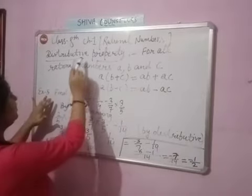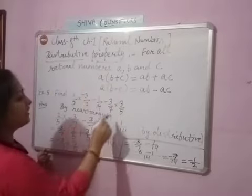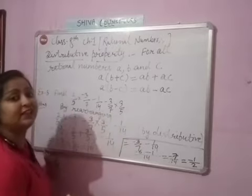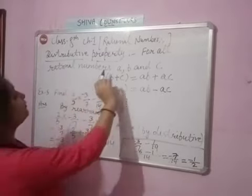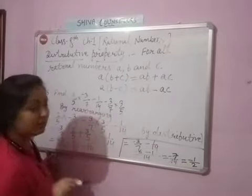So example number 5. First, the base property is distributive property, because this property will be used in this example. Look at the property: for all rational numbers a, b, and c.